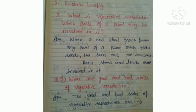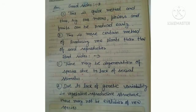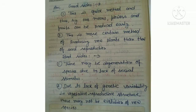Question number 2: what are the good and bad sides of vegetative reproduction? Good sides — first, this is a quick method and by this means flowers and fruits can be produced early. Second, this is a more certain method of producing new plants than seed reproduction. Bad sides — first, there may be degeneration of species due to lack of sexual stimulus. Number 2, due to lack of genetic variability in vegetative reproduction, there may not be evolution of new species.